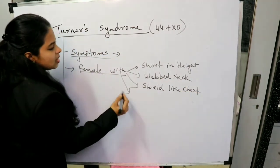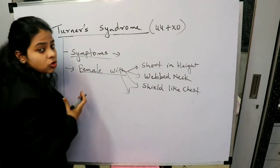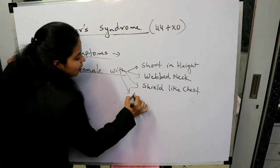So if we start from overall - from height, then we come to neck, then we come to chest. Now ovaries - the ovaries are not developed.